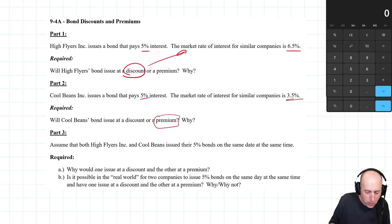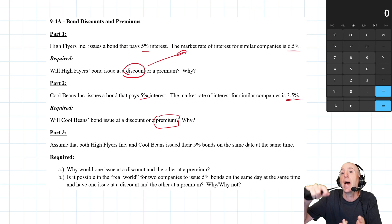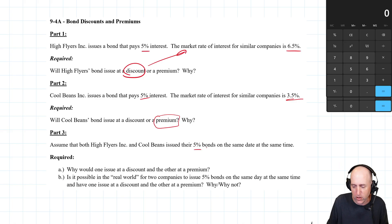So why would one issue at a discount and the other a premium? It speaks to the quality of the company and the outlook for the industry. So those are two big reasons why two companies can both issue at 5% on the same day, same time, one gets a premium, one gets a discount. It's the quality of the company and the quality of the industry.